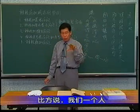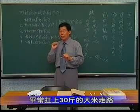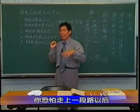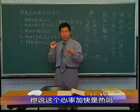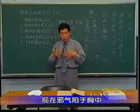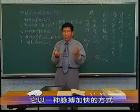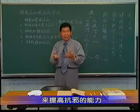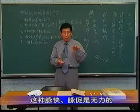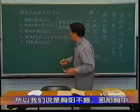就是说比方说我们一个人，平常扛上三十斤的大米走路，什么事都没有，心率不会加快，现在让你扛上一百斤的大米，你走上一段路就开始心率加快了。你说这个心率加快是热吗？它不是热，它是个虚性的代偿。现在邪气陷于胸中，胸中阳气不足，所以奋力抗邪，以脉搏加快的方式来提高抗邪的能力。所以这种脉促而无力的，是胸阳不振、邪陷胸中。